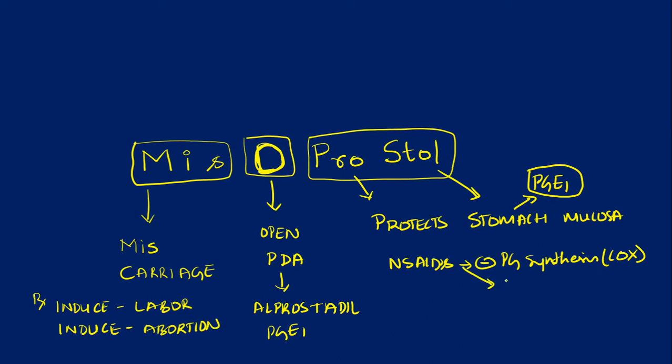NSAIDs inhibit the PGE1 synthesis. But when you give misoprostol, misoprostol will increase the mucus production. How? It increases the prostaglandin E1 synthesis, which is a prostaglandin E1 analog by itself, thereby it increases the mucus production and decreases the gastric acid secretion.